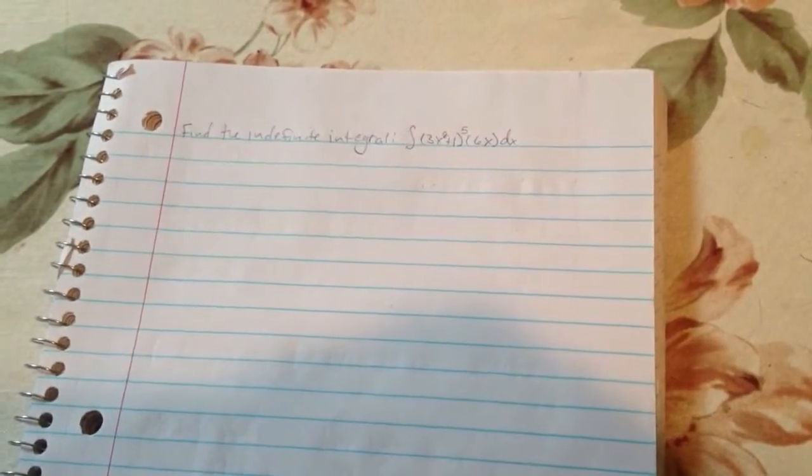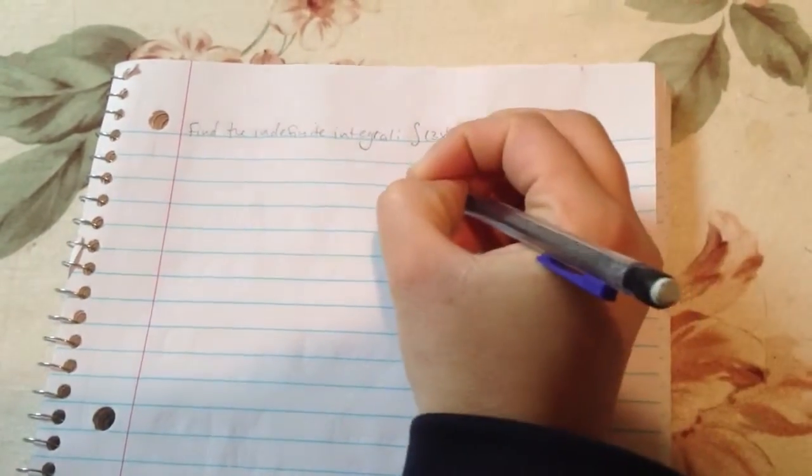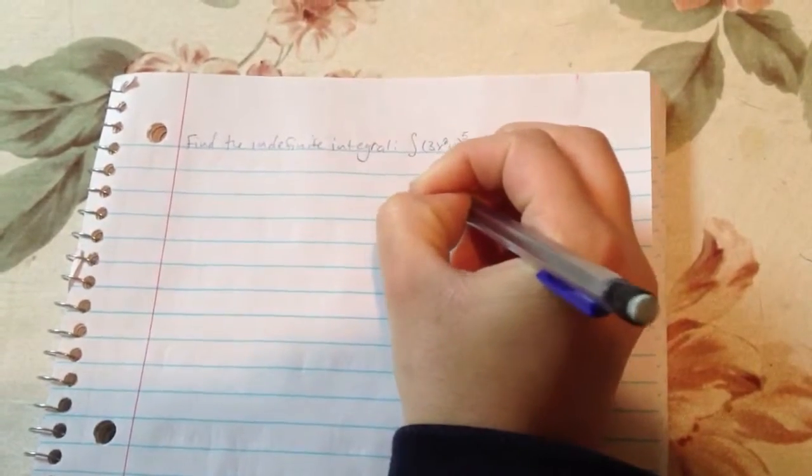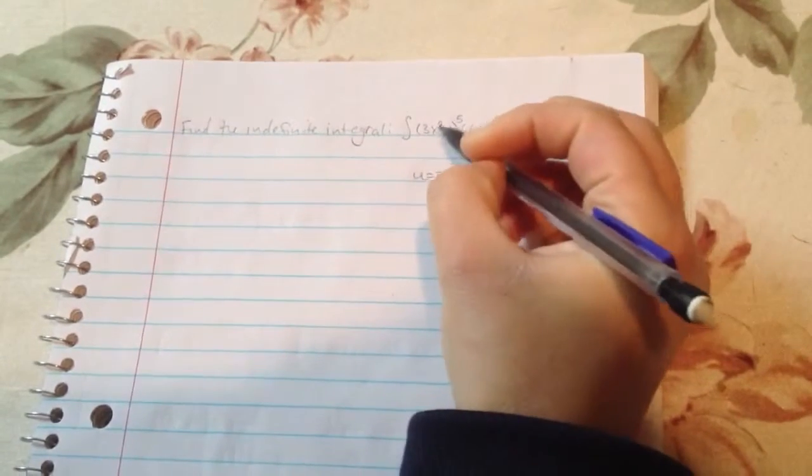So the first thing we're going to do is put these terms here in terms of u. So our u is going to be equal to 3x squared plus 1, and this is our g of x.